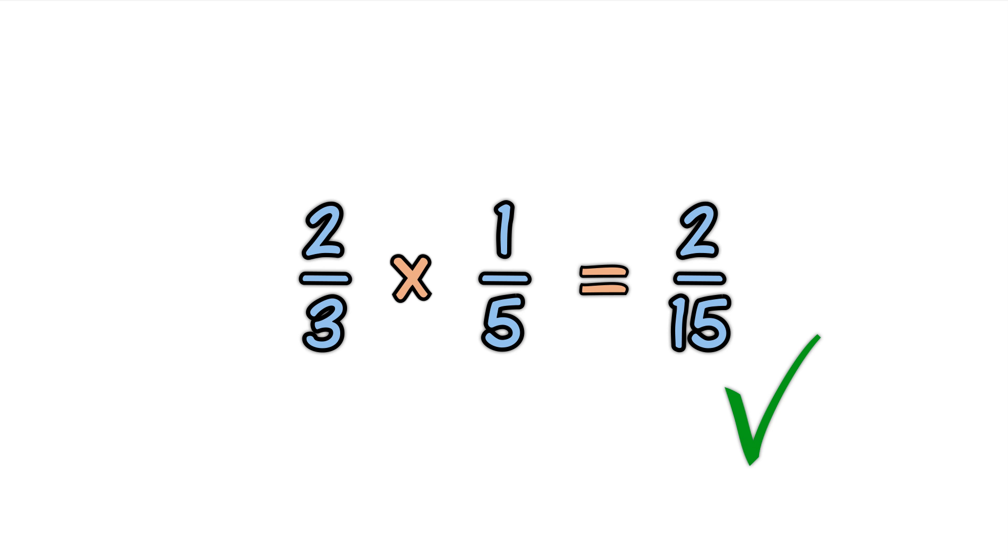Here's another example. Three divided by one-quarter. Make three into three over one. Step one. Turn the second fraction upside down. The reciprocal. One-quarter becomes four over one.